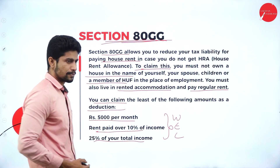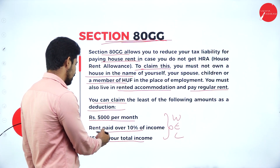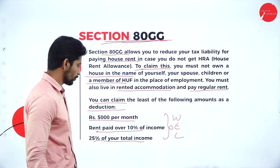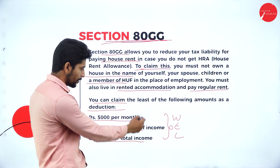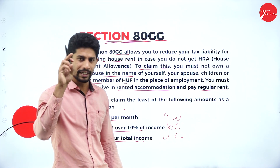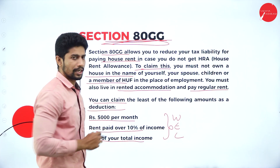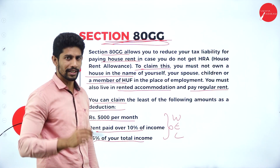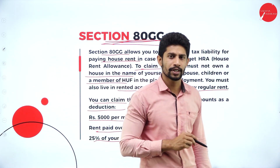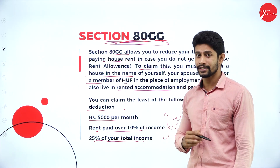The three items for the Section 80GG deduction calculation are: first, 5,000 rupees per month (60,000 per year); second, rent paid over 10% of income; and third, 25% of your total income. Whichever of these three values is the least will be considered as the rent paid and you can claim that amount as a deduction under Section 80GG from gross total income.